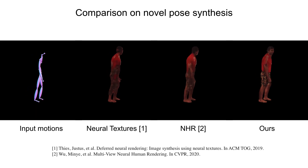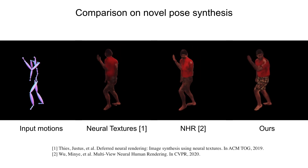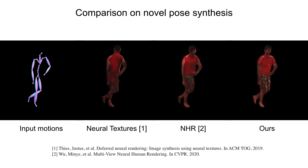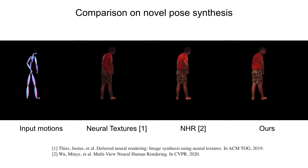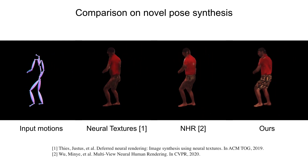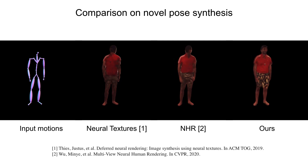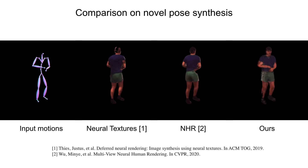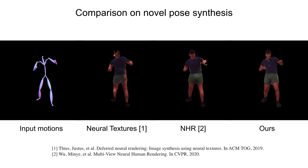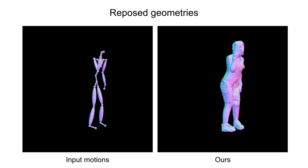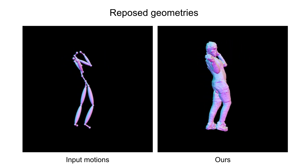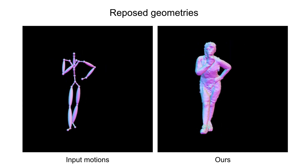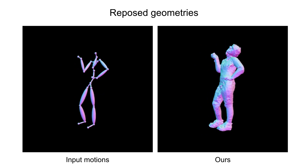We also compare with baselines on novel pose synthesis, i.e., synthesizing images under input motions. Our method outperforms the baselines with a large margin. In addition, our approach can also explicitly animate a reconstructed human mesh given input motions. Our method outperforms the baselines.